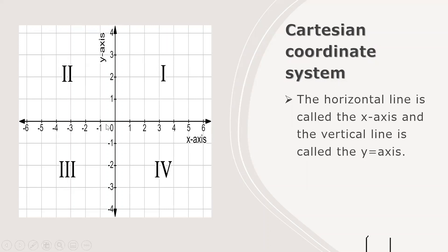The x-axis moves left and right, and the y-axis moves up and down. All the numbers to the right are positive, all the numbers to the left are negative, all the numbers up are positive, and all the numbers down are negative.